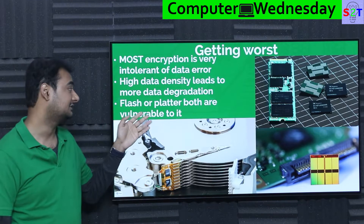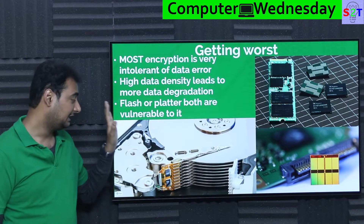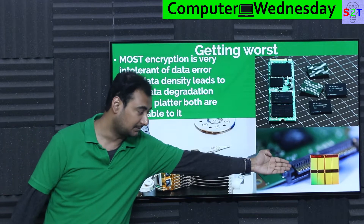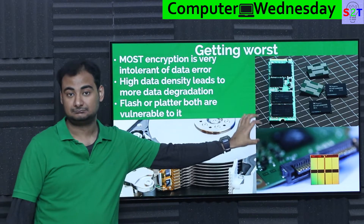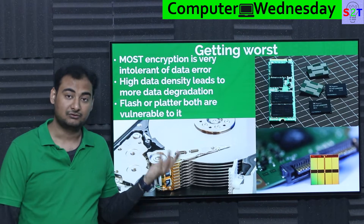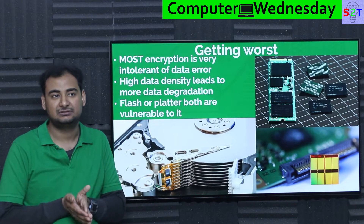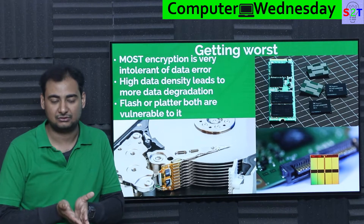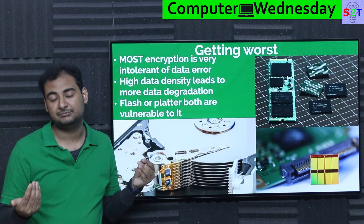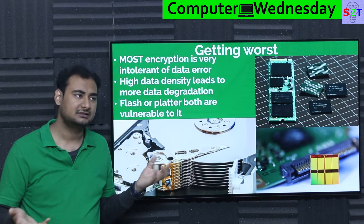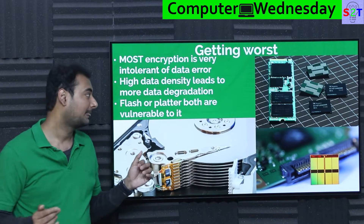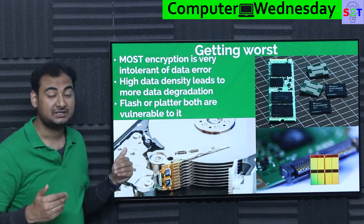High data density is another culprit, and it's not only limited to hard disks — it also applies to NAND flash. The smaller we make the gate, the more vulnerable it becomes. It becomes less reliable as a source of storing whether a bit is on or off. What bit changes determines whether your file experiences a minor glitch or is completely gone. So it is getting worse.